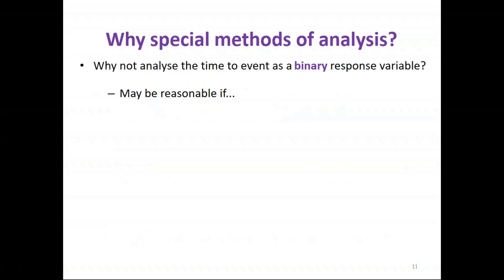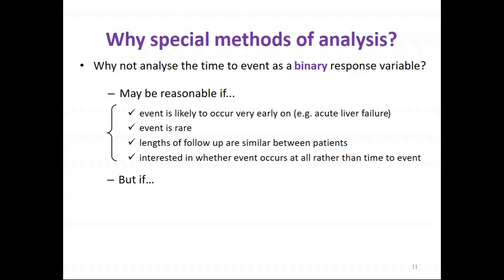We might think about analysing the data as a binary response variable — just looking at whether or not the event of interest occurred and ignoring information about time. That might be an option if events are likely to occur very early on, as in acute liver failure, if the event is rare, if lengths of follow-up are similar between patients, and if we're interested in whether the event occurs at all rather than how long it takes.